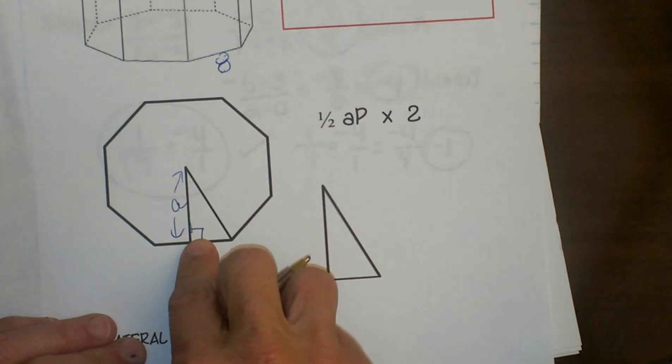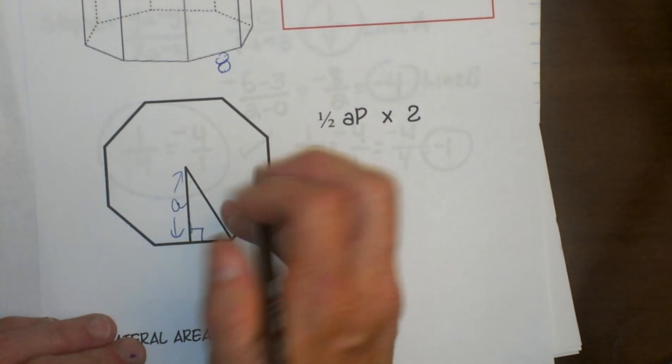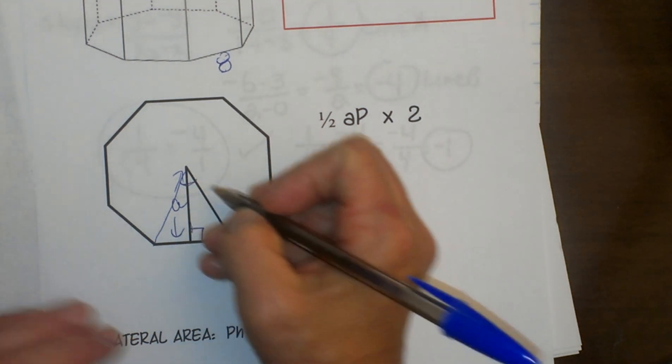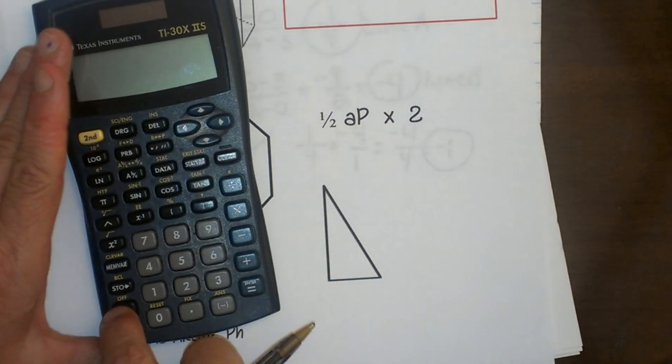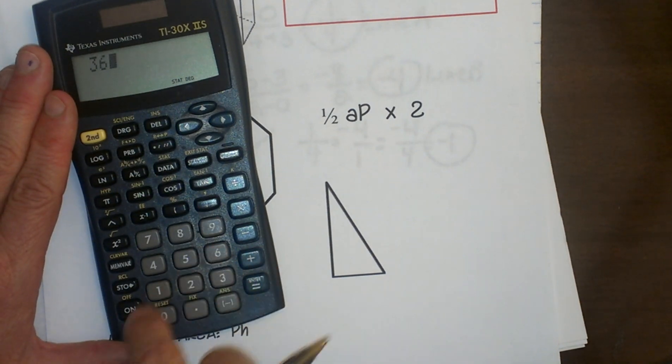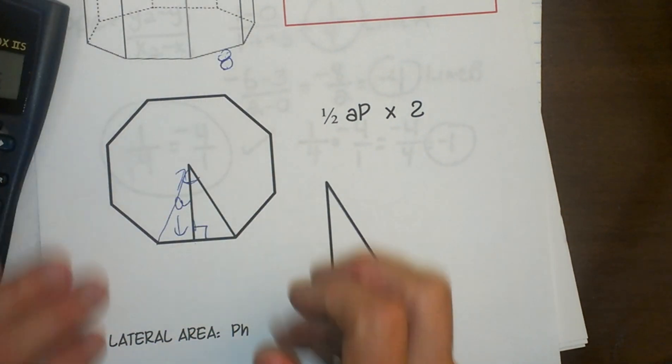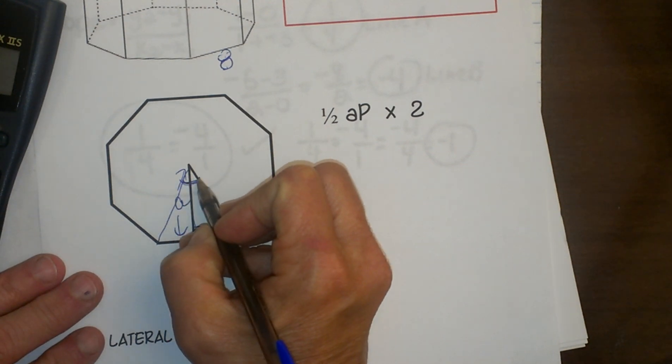When you draw that in, you get a right triangle. Because this is regular, it's actually going to bisect a central angle right here at the middle. So what I have to do is take 360 degrees and divide it by 8 to get that central angle. That means this angle right here is 45 degrees.